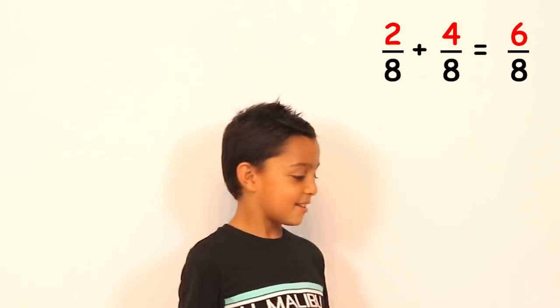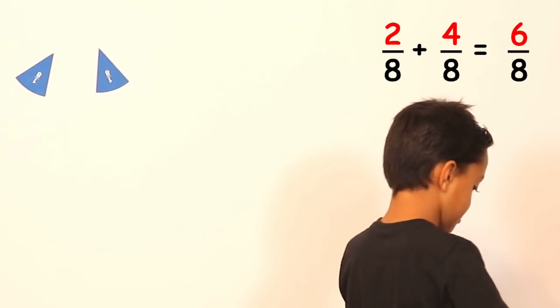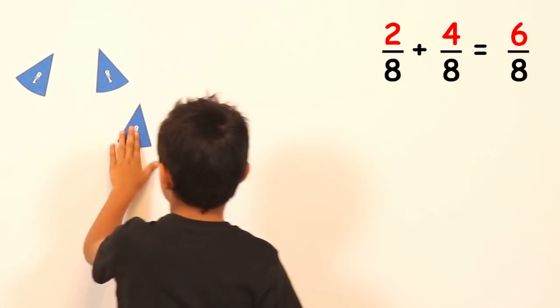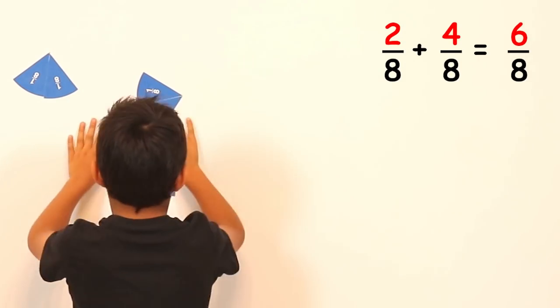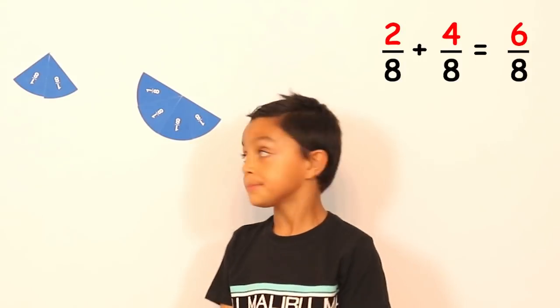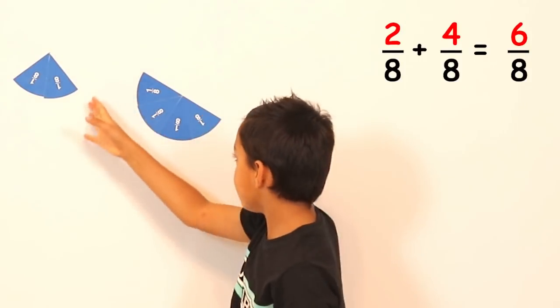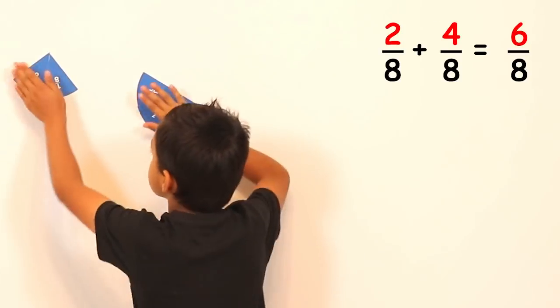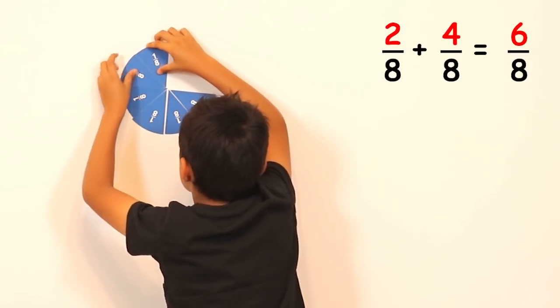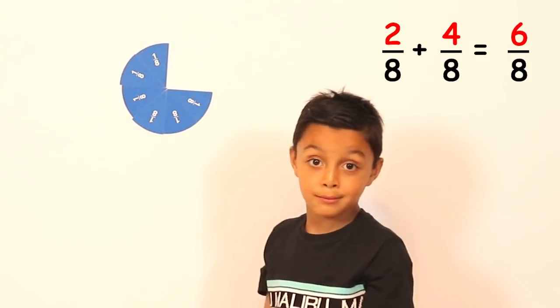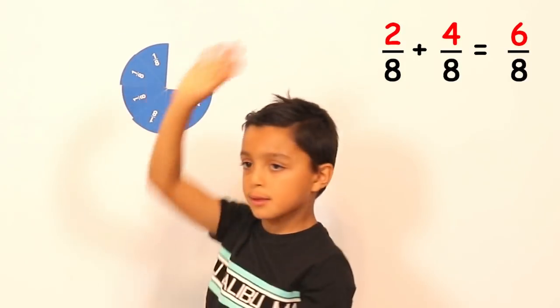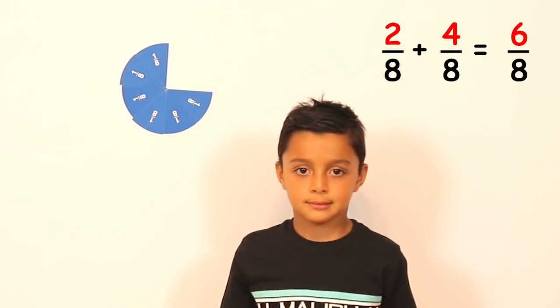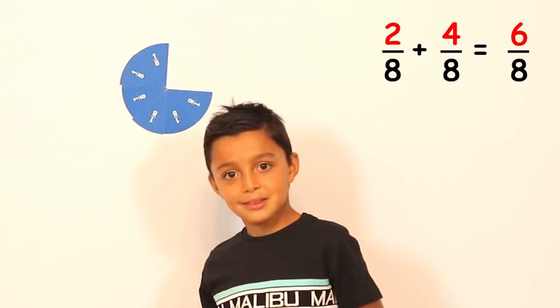Now Niall what do you think the answer to two eighths plus four eighths will be? Six eighths. Can you show us? Two eighths plus four eighths. So what have you done there Niall? I've put two eighths and four eighths on our whiteboard. And if you plus them together, it equals six eighths. Can you count them for us? One, two, three, four, five, six. So very good. So adding fractions is very simple when you've got pieces the same size isn't it? Yes.